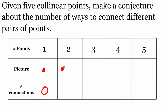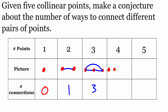With two points, we can connect them with a single line, so there is one connection. With three points, we can connect the first and second, the second and third, and the first and third — so three total connections. With four points, we can connect points 1-2, 2-3, 3-4, 1-3, 1-4, and 2-4, giving us six different connections.